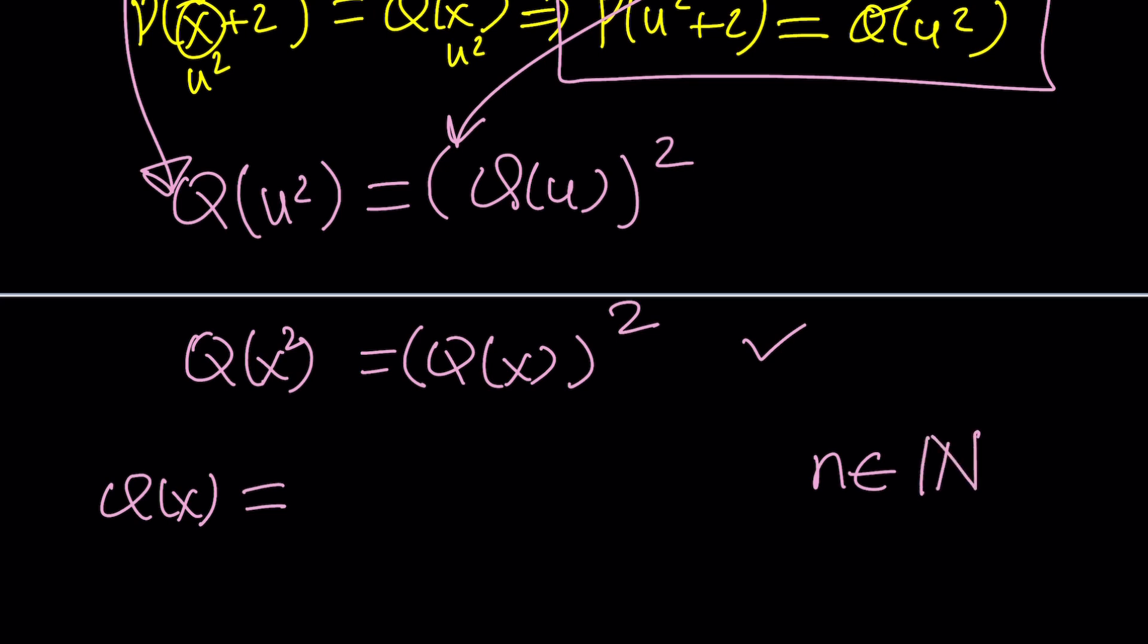It doesn't include zero in the US and other countries are different. They have different definitions. But I know in France, and I believe in Turkey too, zero is considered a natural number. So let us know in the comment section if where you live, zero is considered a natural number. But I know in the United States, it's not. So natural numbers are the same as counting numbers.